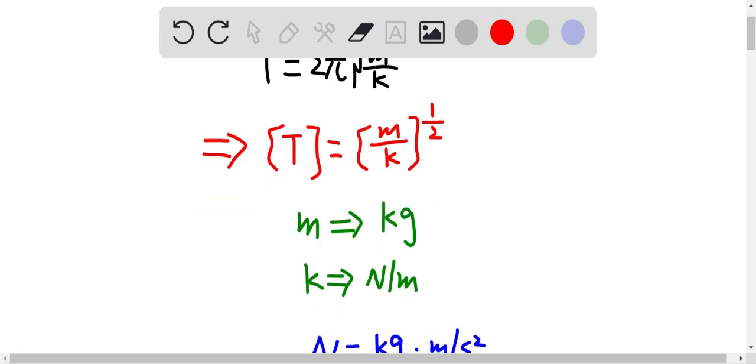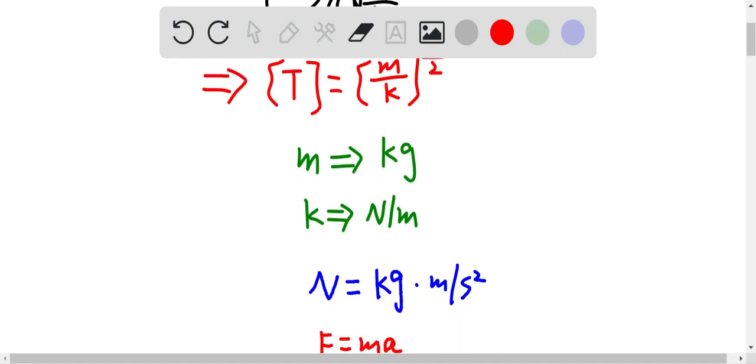So we know mass has unit kilogram. Spring constant has unit newton per meter. And we know newton can be equal to kilogram times meter per second squared.